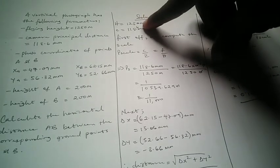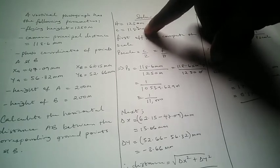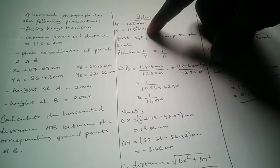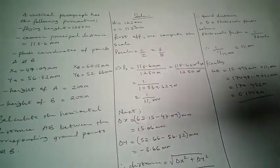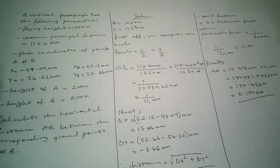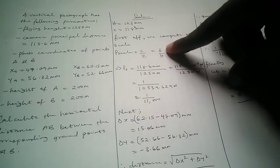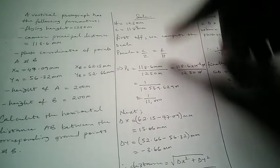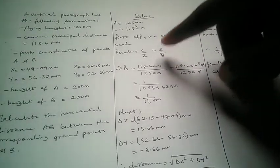The flying height given to us was 1250 meters and the camera principal distance was 118.6 millimeters. With these two values, the first thing we are going to do is calculate the photo scale, because we are not given a photo scale in the question. To get the photo scale, you use focal length over flying height, or principal distance over flying height.